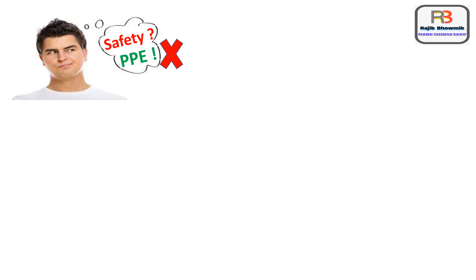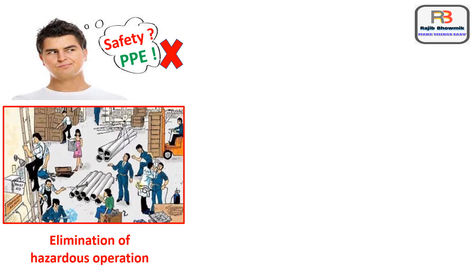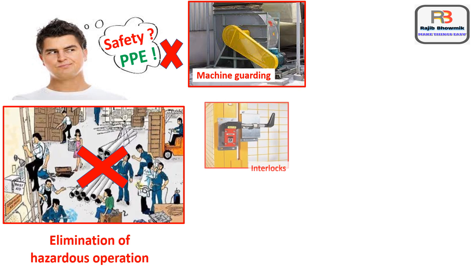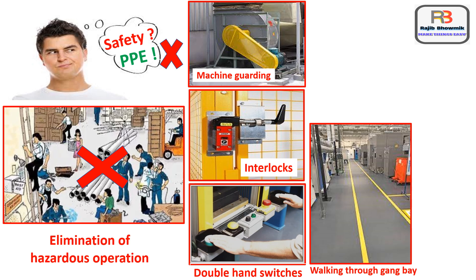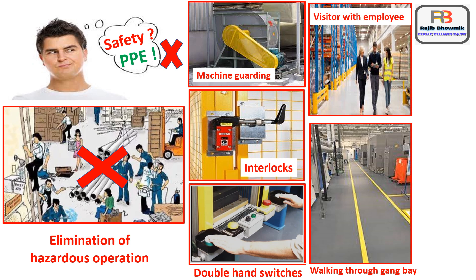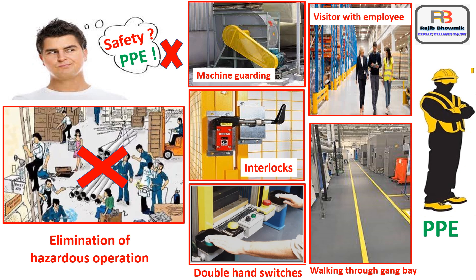Before PPE, first we should think how those hazardous operations can be eliminated or the impact can be reduced. If elimination or reduction is not possible, then we should think of implementing engineering controls like machine guarding, interlocks, double hand control switches, etc. Parallelly, some administrative controls also need to be enforced, like walking only through gangway, visitors to be accompanied with an employee, etc. PPE is the last option after doing all these.